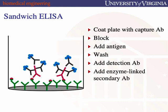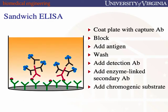We then use an enzyme-linked secondary antibody — cheap to produce, provides signal amplification, and doesn't waste our expensive primaries. The secondary must not be detected by the capture antibody setup, which would give a false positive signal. We add chromogenic substrate and measure absorbance — the process is the same as a direct ELISA from that point.